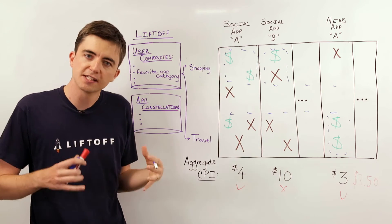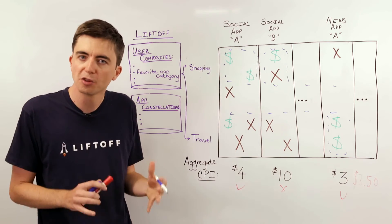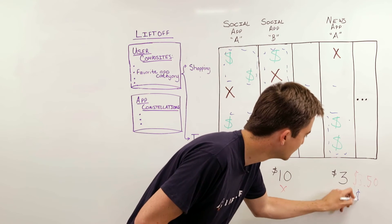And so in aggregate, this allows us to drive better CPIs than would otherwise be possible. So in this case, around $2.50.